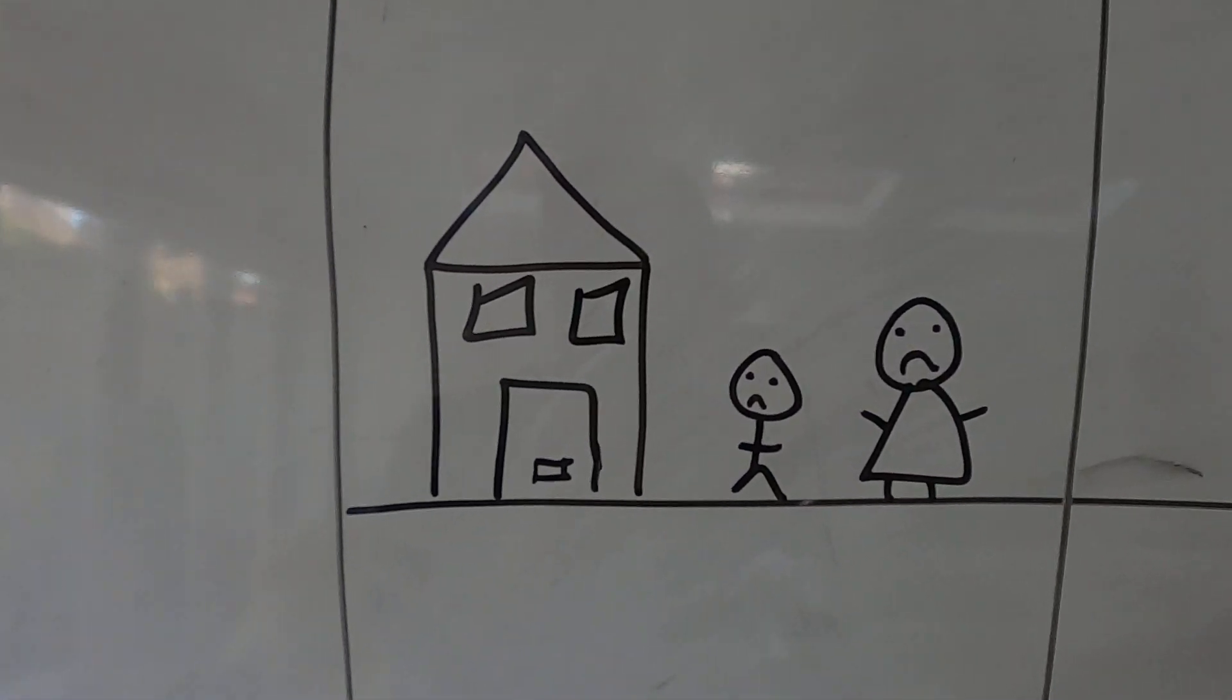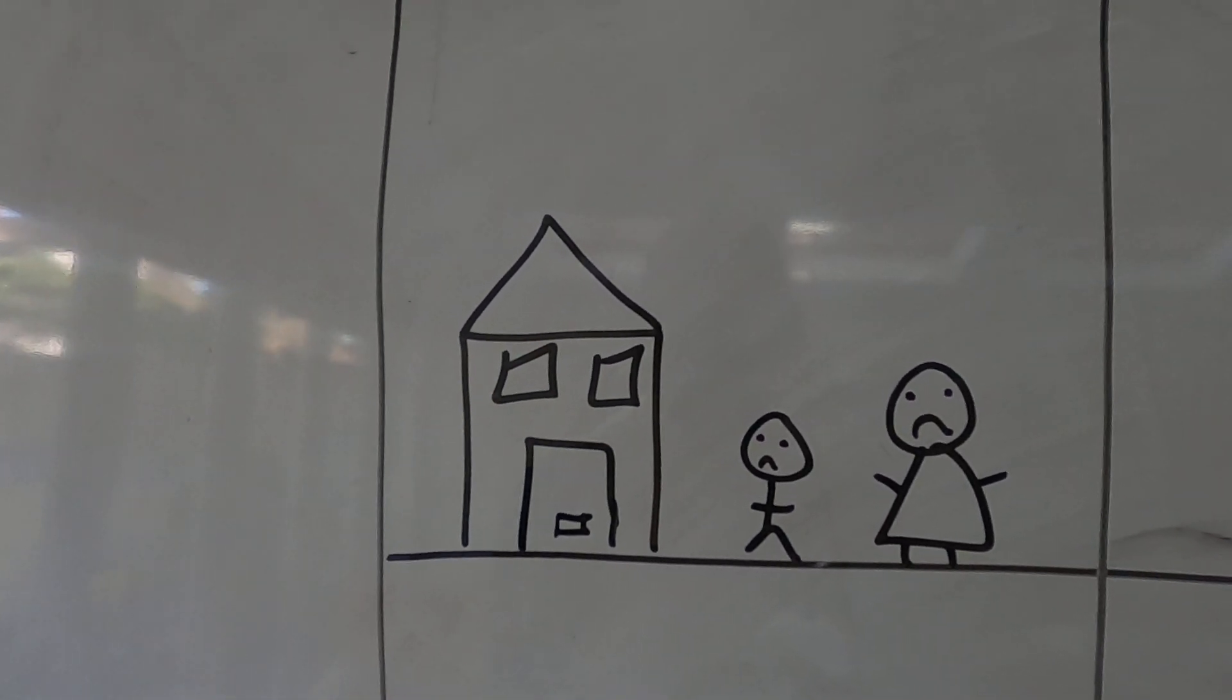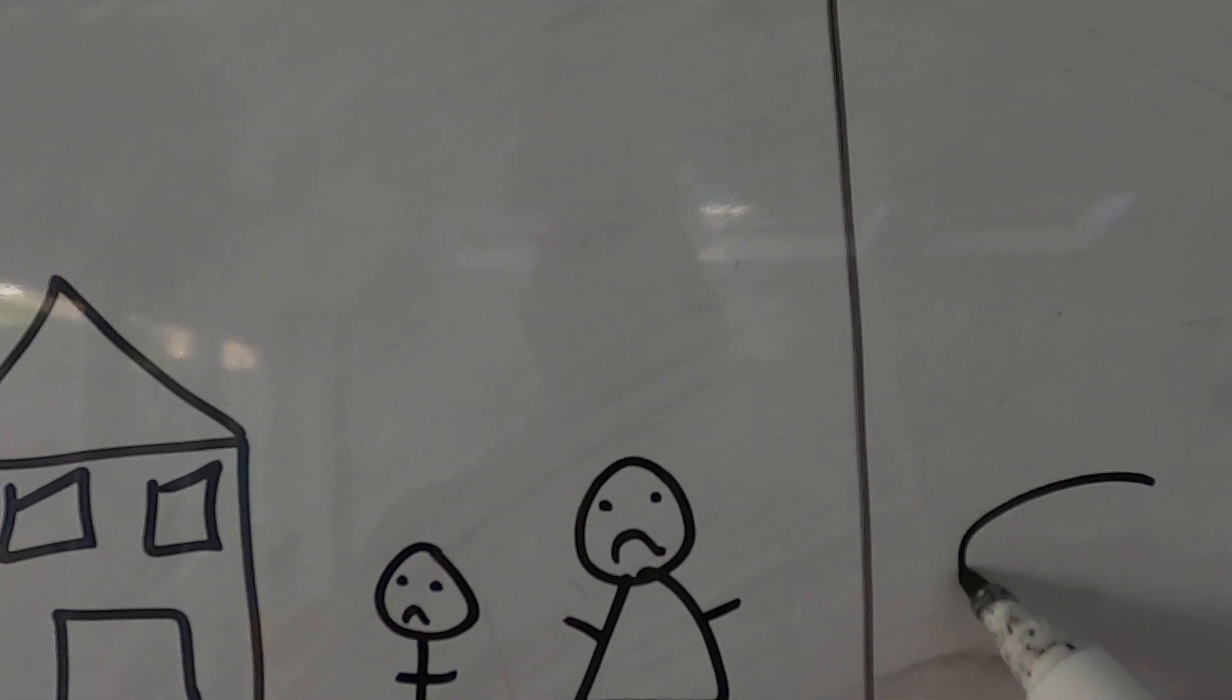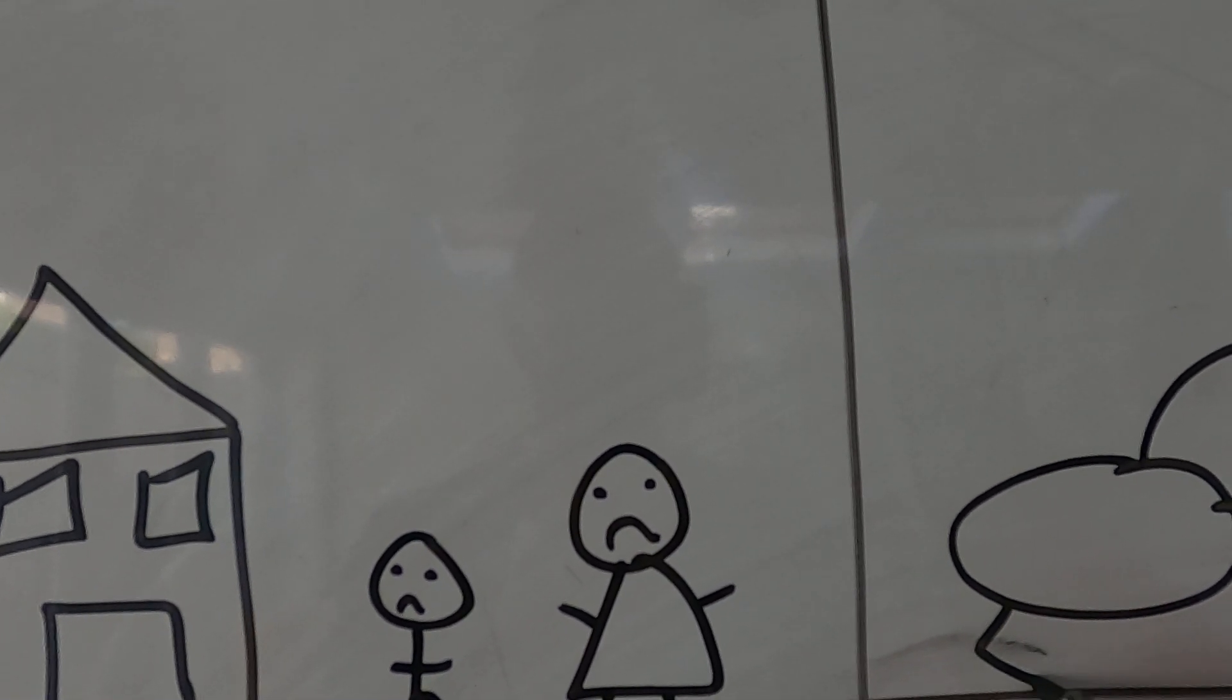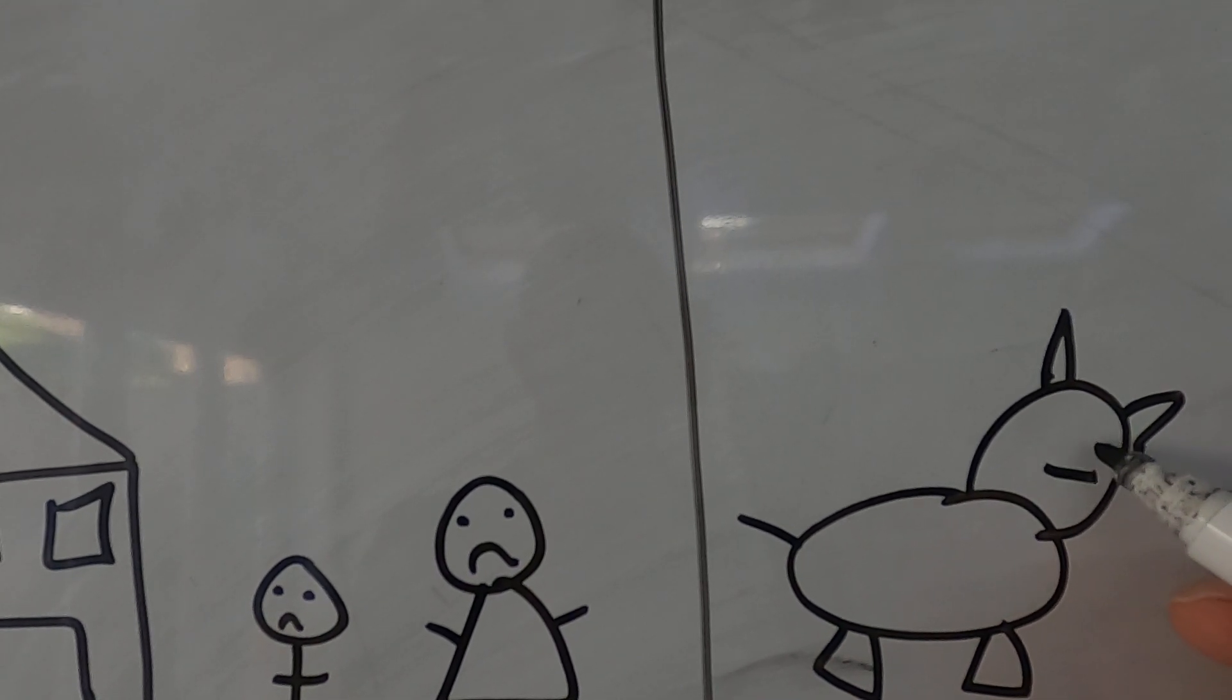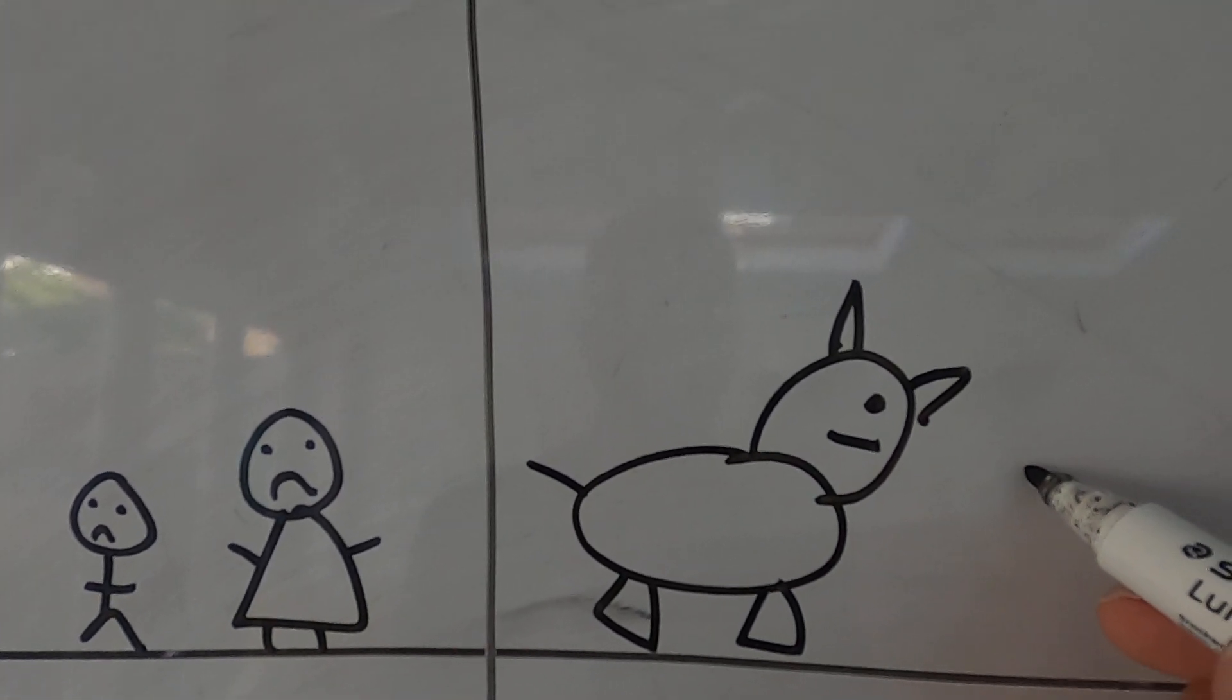So mum said to Jack you must go to market and sell our cow Daisy. So next morning off Jack went with the cow. There's our cow. Horns. There we are. And here's Jack.